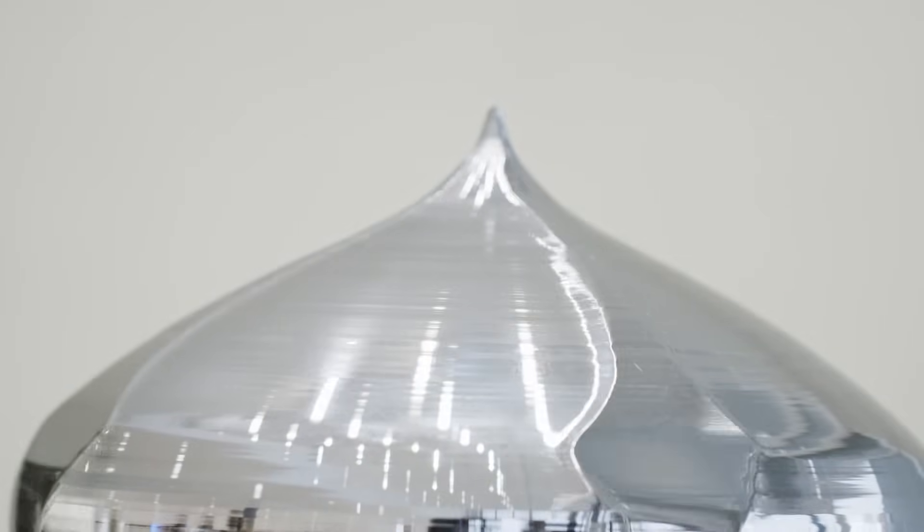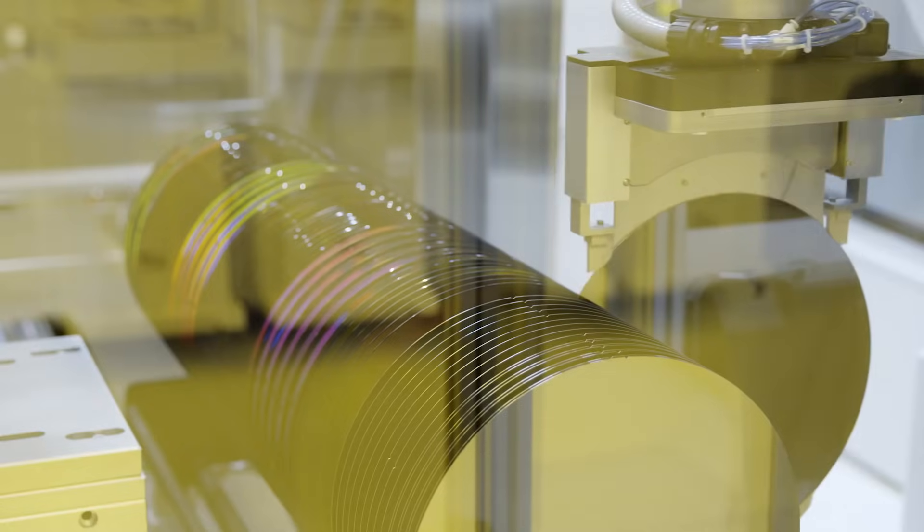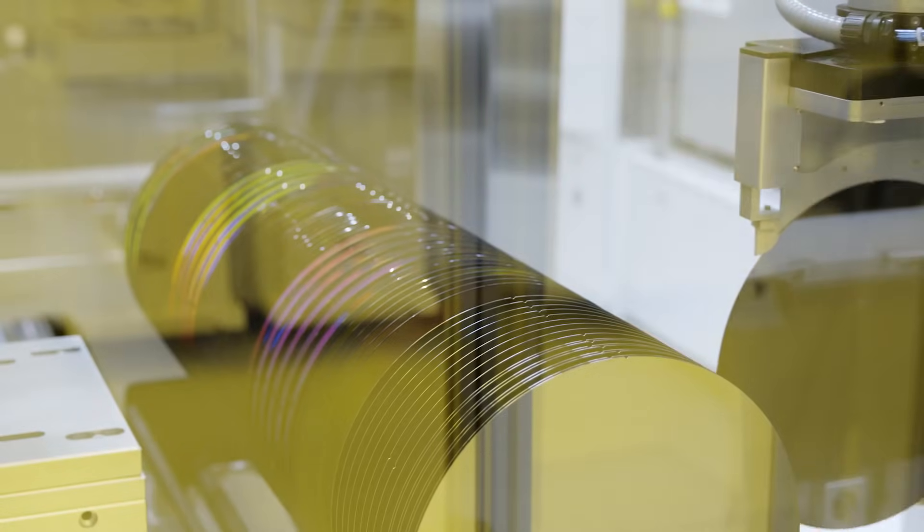After that, it is cut into wafer-thin disks. In Dresden, these raw wafers are 300 millimeters in diameter and less than a millimeter thick.